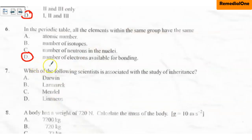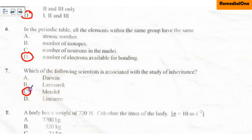Question seven: which of the following scientists is associated with the study of inheritance? A. Darwin, B. Lamarck, C. Mendel, D. Linus. The correct option is C. Gregor Mendel is the father of genetics — he is the one associated with the study of inheritance or genetics.